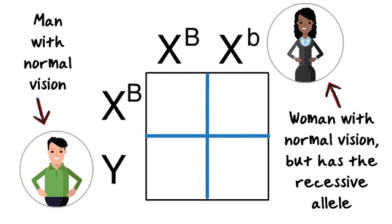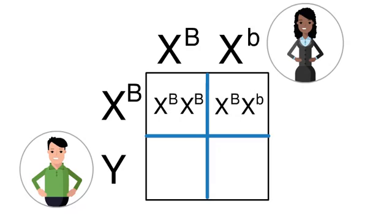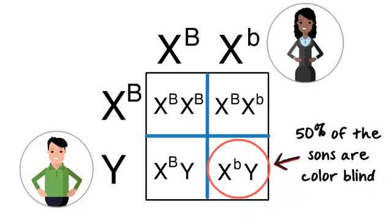Say one of those daughters grows up and marries a man who has normal color vision. This time the daughters are guaranteed a dominant allele from their father, but the sons could get either a dominant or a recessive allele from their mom. Since the boys only get a Y chromosome from their father, 50% of the sons will be colorblind.